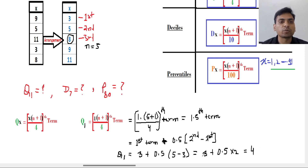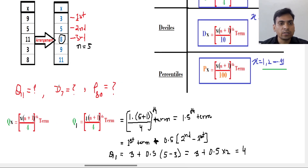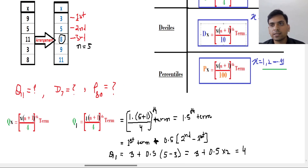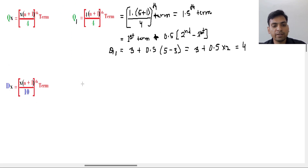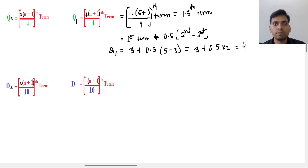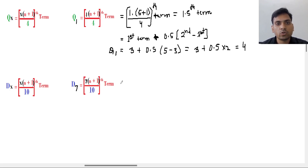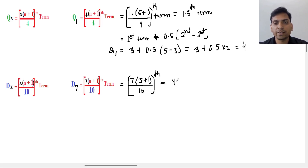Now our focus is on the 7th decile. The formula for decile is D_x = x(n+1)/10 th term. Our target is the 7th decile, so we replace x by 7. The calculation is 7 × (5 + 1) / 10 = 7 × 6 / 10 = 42 / 10 = 4.2. So the result is the 4.2nd term.